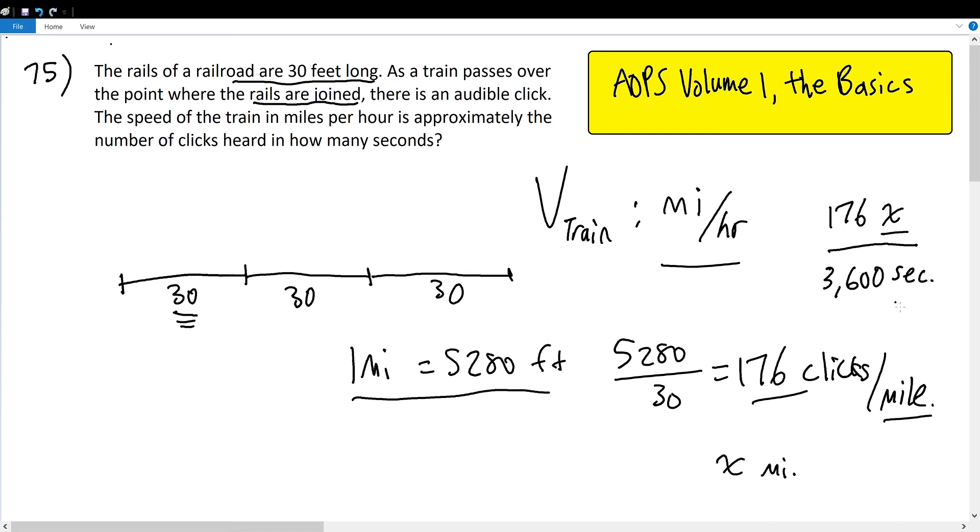And now we've successfully transformed it in terms of clicks per second. We want this to be approximated, so since we want it approximated around 176 to the nearest round number, we get 180 clicks per 3,600 seconds.